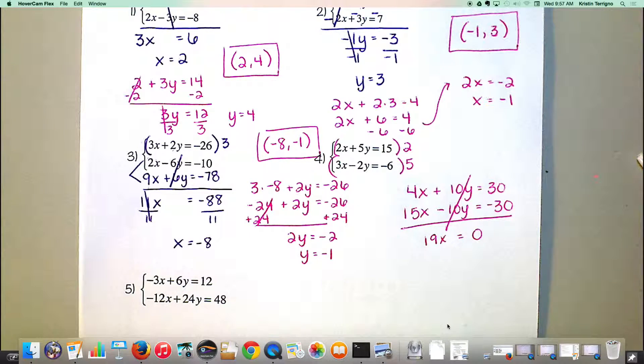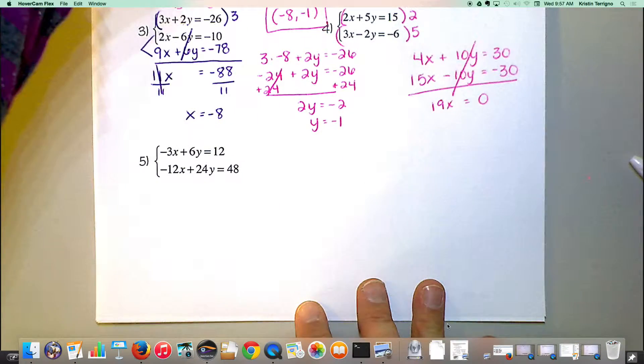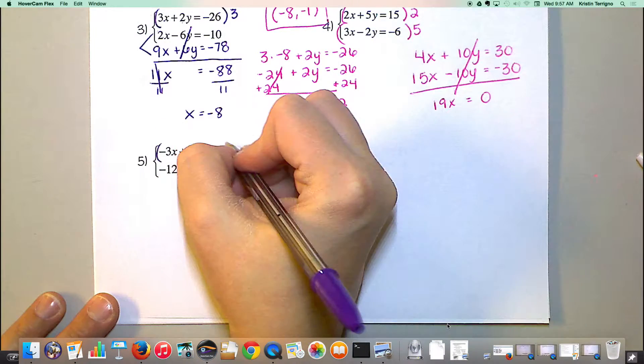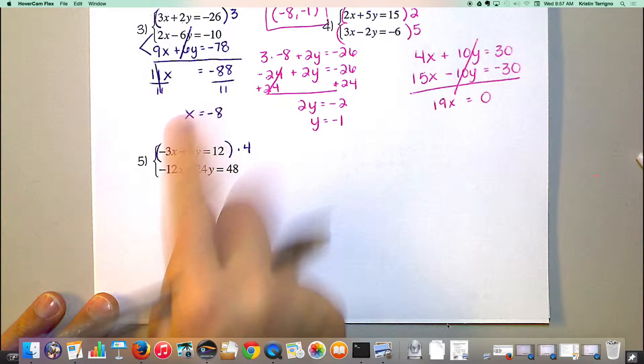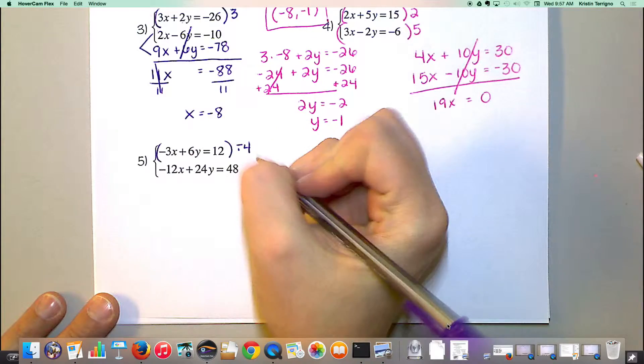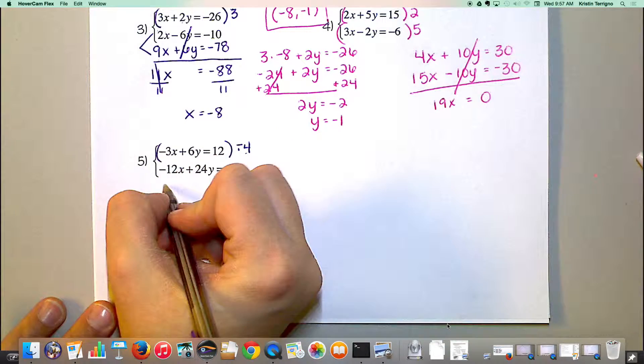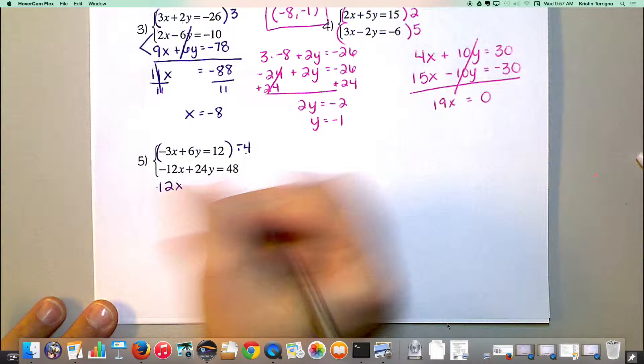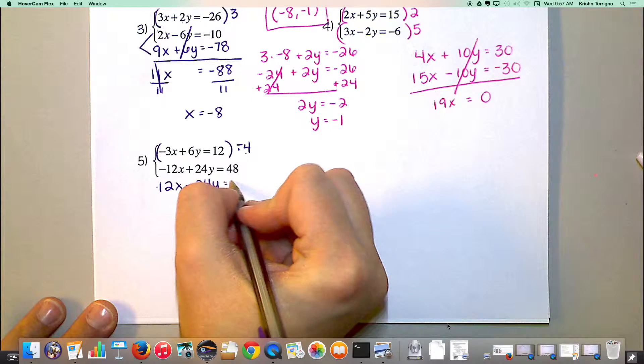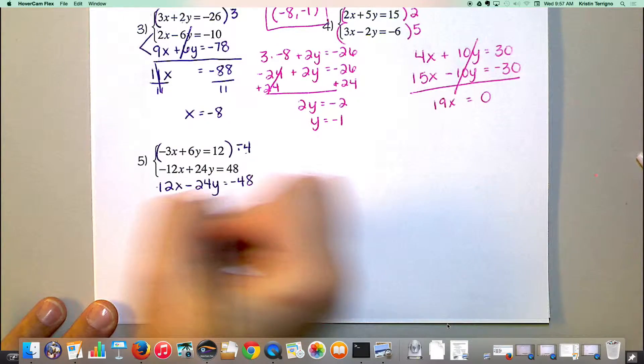Okay. I think we're good. Tell you what, you don't have to write down number 5. Just watch me real quick. What would you want to multiply by here? 4. 4 on the top? Positive 4? Yeah. Okay. Okay. Yeah, if I multiply by a positive 4, that's going to give me negative 12, which doesn't cancel with negative 12. But if I multiply by a negative 4, that's going to give me positive 12x, negative 24y, and negative 48.